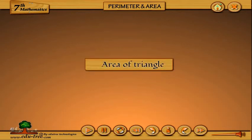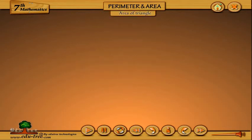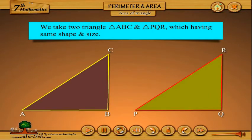Area of Triangle. We take two triangles ABC and PQR which have the same shape and size.